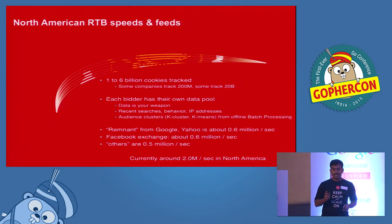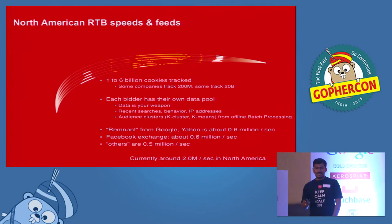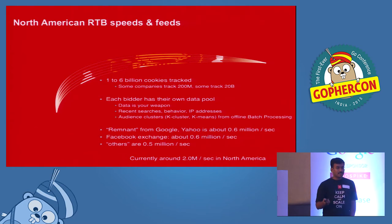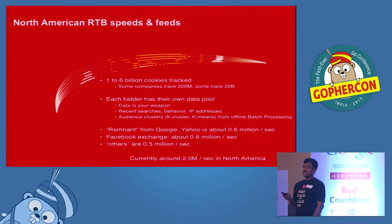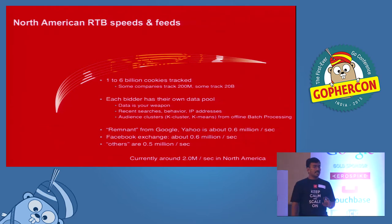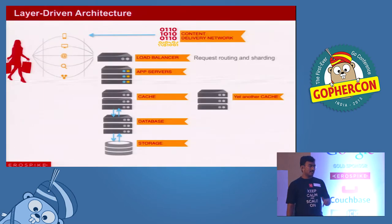The scale we're talking about is the amount of transactions happening in parallel across North America demographics — there are around six billion users being tracked. Every website you visit is a write into a database, so you have to have a high flow of writes into the system. Ad exchanges are doing almost about a million transactions per second. From Facebook and Google exchanges, they're doing about 0.6 million transactions per second. One of our biggest customers, Nexus, the third largest bidding platform, is doing about 1 million transactions per second today.